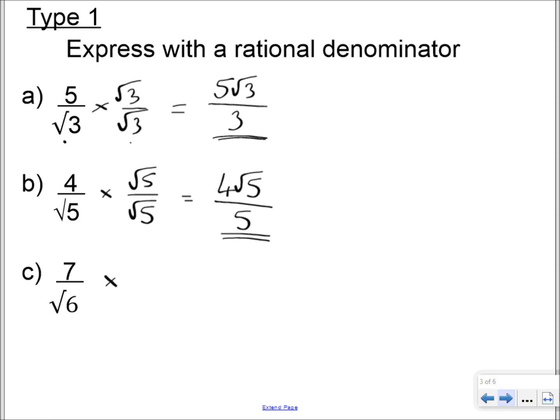Now, for this one, we just multiply by root 6 over root 6, our denominator divided by itself, and we end up with a numerator of 7 root 6 over root 6 times root 6, which is 6. And that is finished.